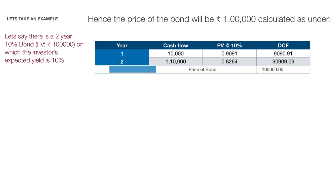The sum total of all the discounted cash flows is 1 lakh rupees, which is the price of the bond. This is quite obvious because since the coupon and the yield are equal, the price of the bond must be equal to the par value or the face value, which is 1 lakh.